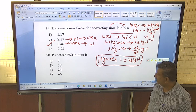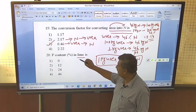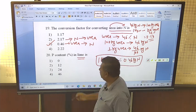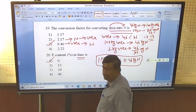P content in lime is - lime is calcium carbonate. There is no phosphorus in calcium carbonate. That's why phosphorus content is 0.